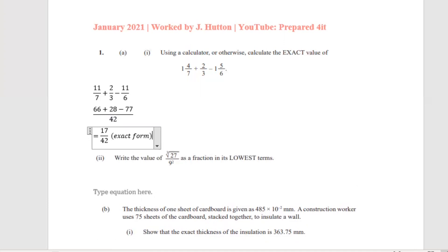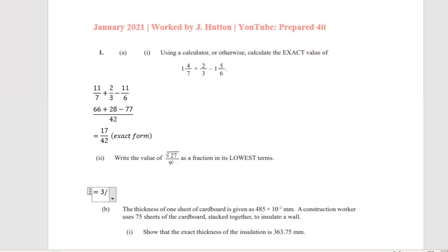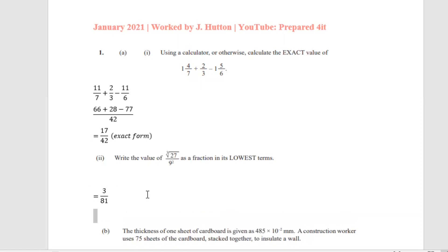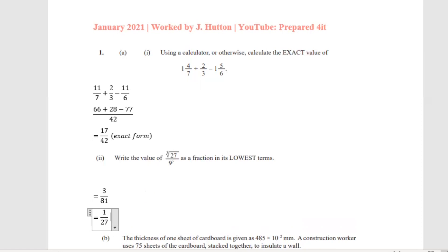Part 2 says: write the value of the cube root of 27 over 9 squared as a fraction in its lowest terms. The cube root of 27 is 3, and 9 squared gives us 81. Simplifying 3 over 81: 3 into 3 goes once, and 3 into 81 goes 27 times, giving us 1 over 27 as our answer.